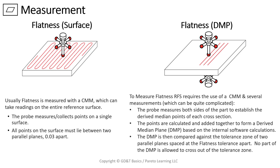Over here on the left, on the surface: flatness is usually measured with a CMM. If you don't have a CMM, the method I prefer is putting the part up on machinist jacks, getting it leveled out with a dial indicator pointing down, finding my high points, getting those zeroed out using three machinist jacks, setting my dial indicator to zero, and running across the surface in any direction looking for drops in the needle — any kind of deviation.